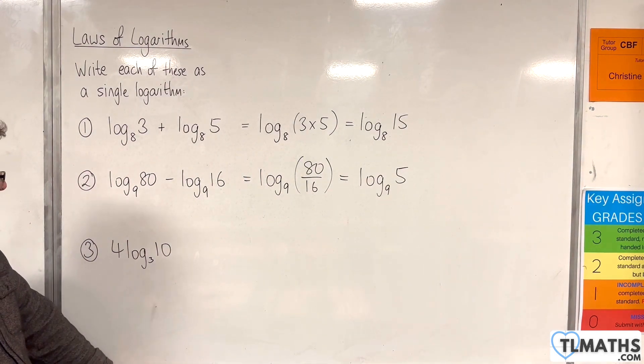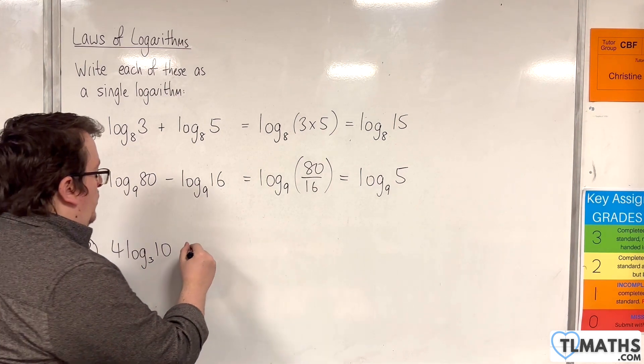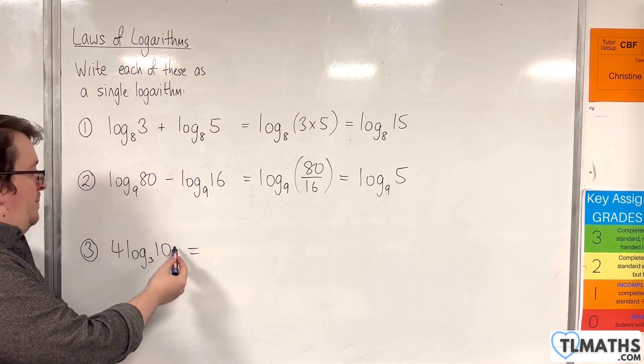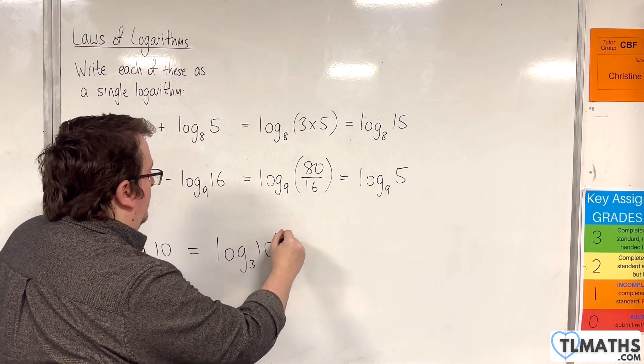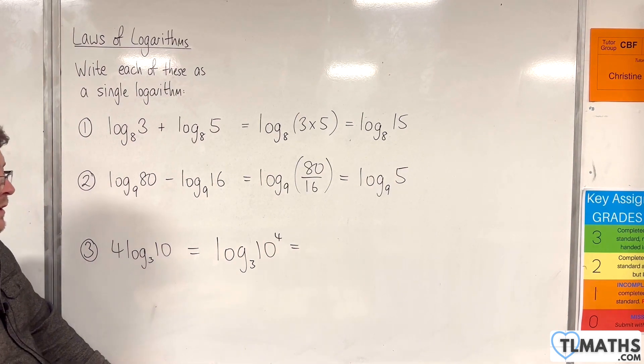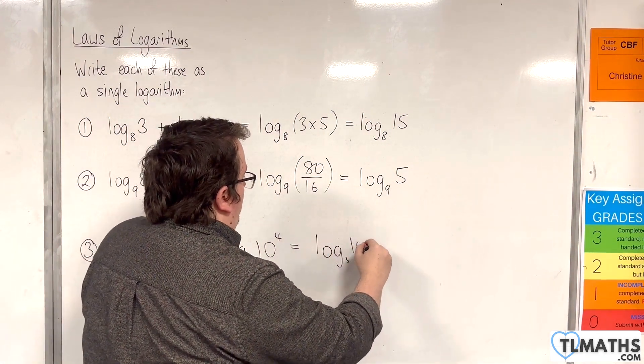For number 3, 4 log base 3 of 10. For this, we can use the power rule, which allows me to bring the 4 up to the power of the 10. So log base 3 of 10 to the 4, and I'll write that as log base 3 of 10,000.